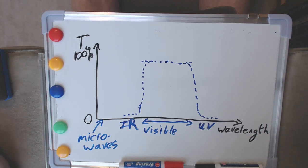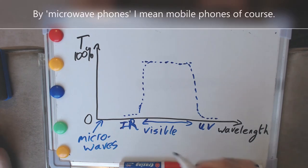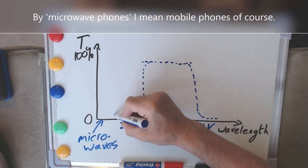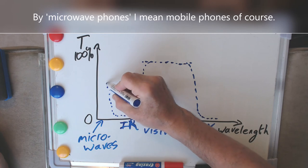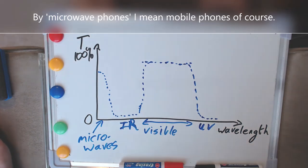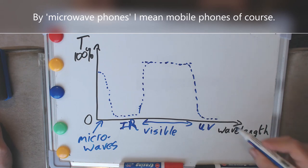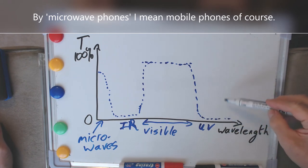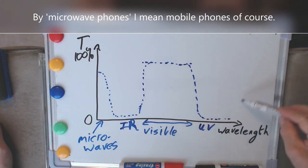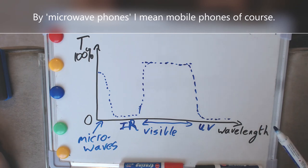But of course we all want to use our microwave phones still, so in fact we need to get a little bit more sophisticated and have the transmission go up again when we get to microwaves. So this is a very complex arrangement that we want to manufacture for our domestic glassware.